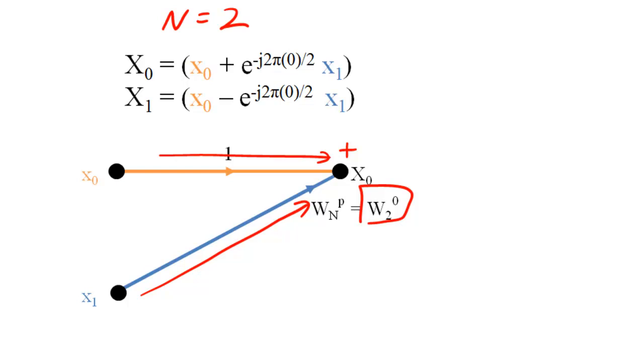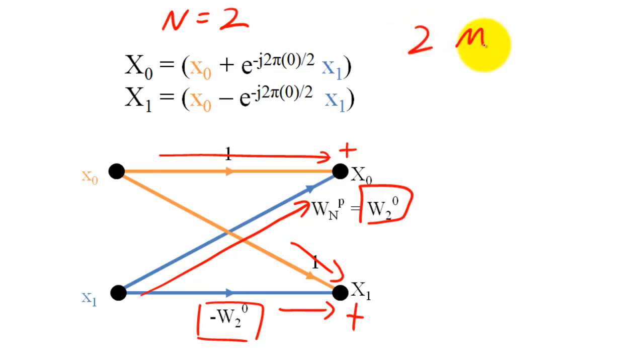We also multiply X1 by negative W sub 2 raised to the 0 and add that product to X0 to compute the second DFT sample. We see that a two-sample DFT requires only two multiply accumulates.